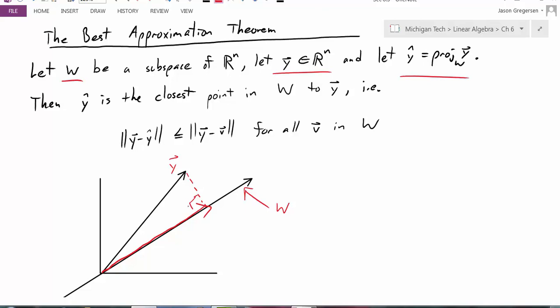So what do we mean by best? We mean the error is the smallest. So how do I measure the error? I measure the error by measuring the distance from y to whatever I'm approximating with. So in this case I would have this value is the error in approximating with the projection, and this represents the error in approximating with any other vector v in my subspace. And this statement says that the error in using the projection vector is the smallest. It minimizes my error.